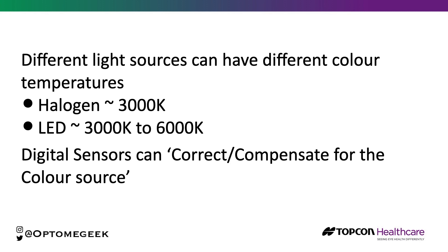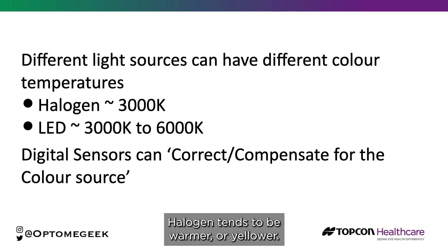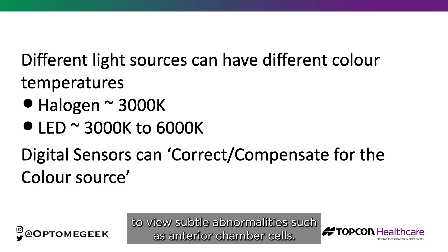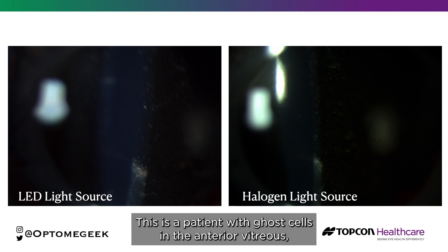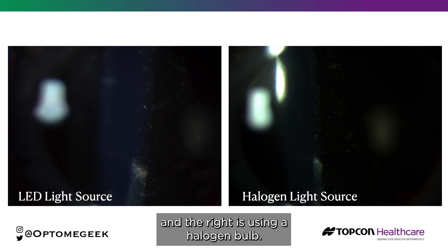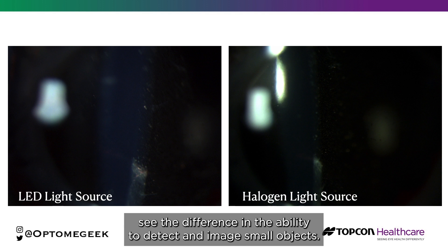Within the system is a digital sensor and this can compensate for the light source used. Halogen tends to be warmer or yellower. LED lights tend to appear cooler and have more light towards the blue end of the spectrum. This is useful for maximising scatter to view subtle abnormalities such as anterior chamber cells. Here's another example — this is a patient with ghost cells in the anterior vitreous following the resolution of a vitreous haemorrhage. The image on the left is using an LED bulb and the right is using a halogen bulb. Hopefully you can immediately see the difference in the ability to detect and image small objects.